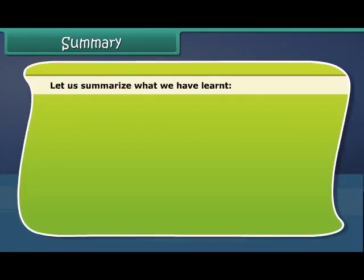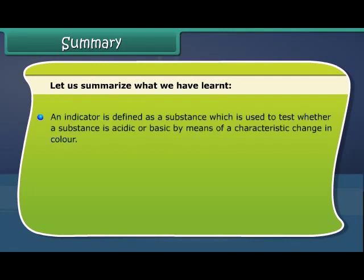Summary: Let us summarize what we have learned. An indicator is defined as a substance which is used to test whether a substance is acidic or basic by means of a characteristic change in color.